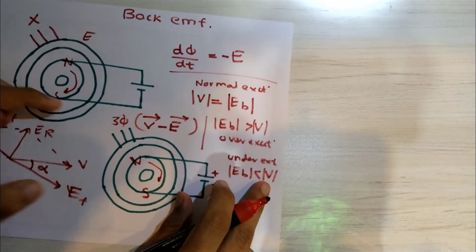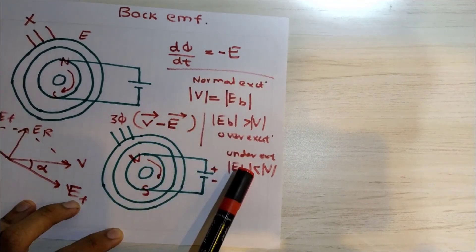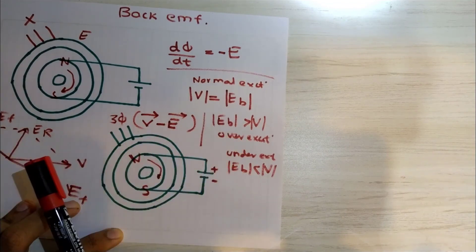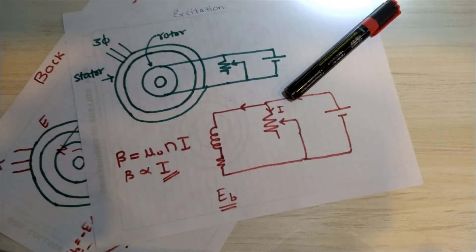So these are the conditions which we can look for in order to over excite or under excite a machine. That's about it, thank you for watching.